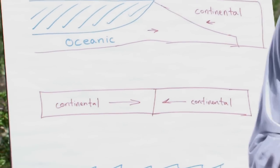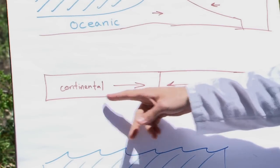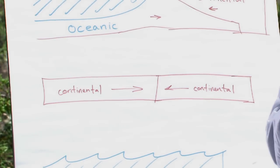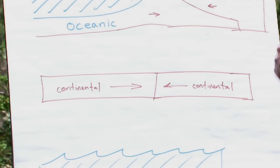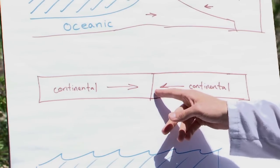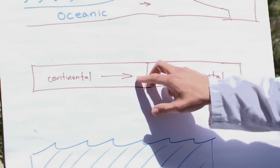The second type of convergent boundary is when a continental plate pushes against another continental plate. Now unlike the other two types, this actually does not cause subduction because these are generally the same density.